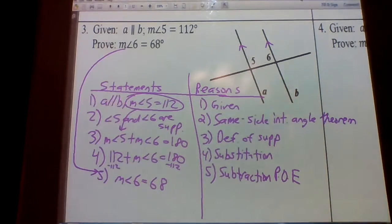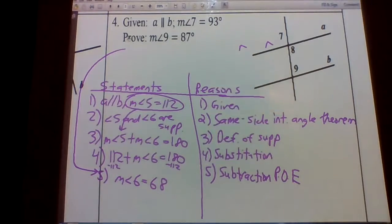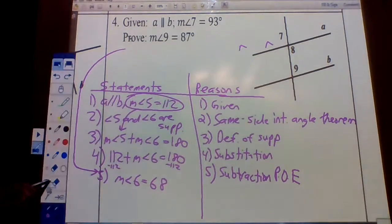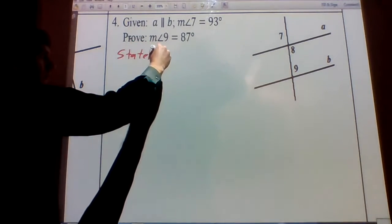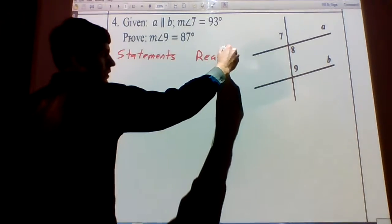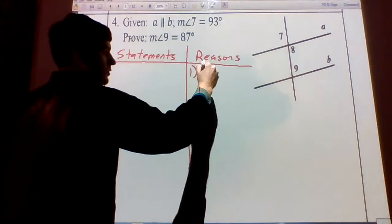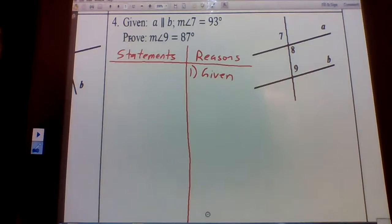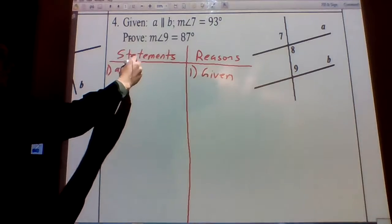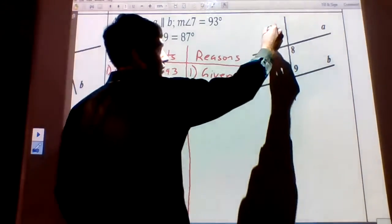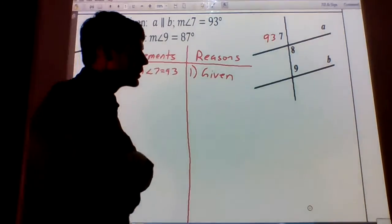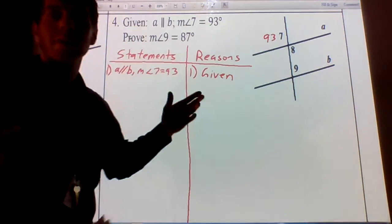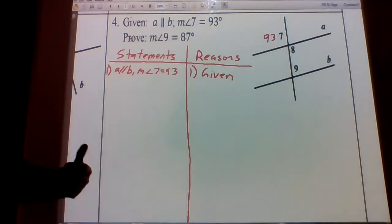Number four is going to take proofs one and two and proof three and combine them together. Given that A is parallel to B and the measure of angle seven equals 93, they've labeled angles seven, eight, and nine. We need to go to eight first and then to nine — there's no direct angle relationship between seven and nine, so we go indirectly. Angle seven and angle eight are vertical angles, so our first angle relationship uses the vertical angle theorem.